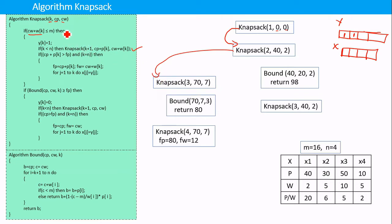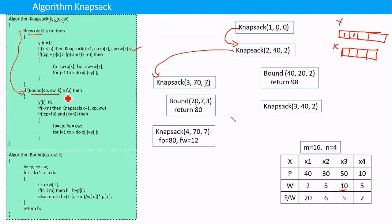During this call, the current weight is 7. If we add the weight of the third item, which is 10, to the current weight, it will not be less than m. So we do not go into that if-condition; we go to the next statement — the next if. Here we use the bound function to check whether we will get a better profit than the final profit. Initially the final profit is 0, so we call bound(70, 7, k), where 70 is the current profit, 7 is the current weight, and k is the current item.